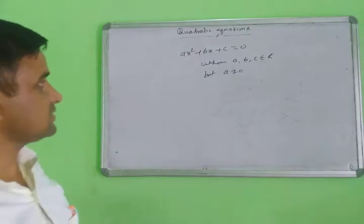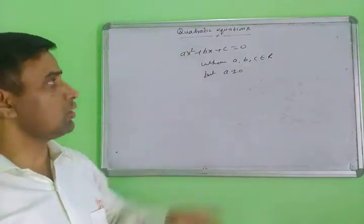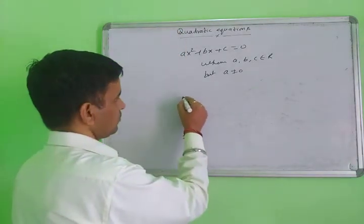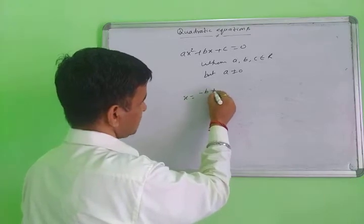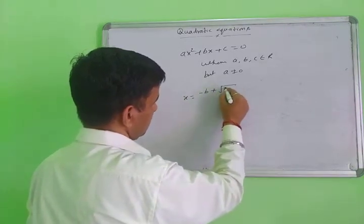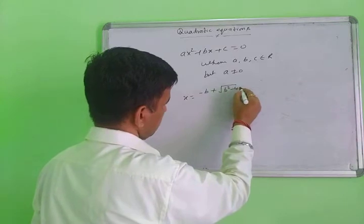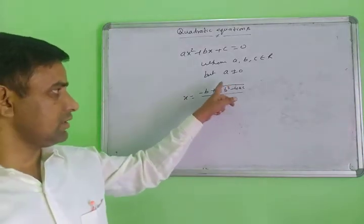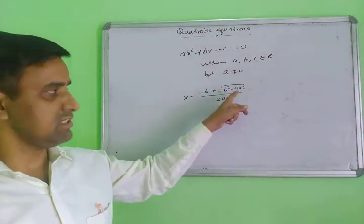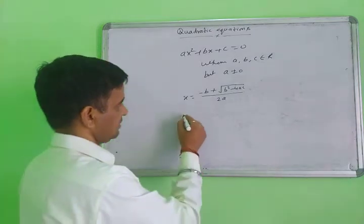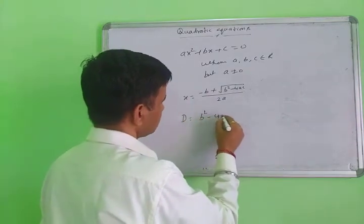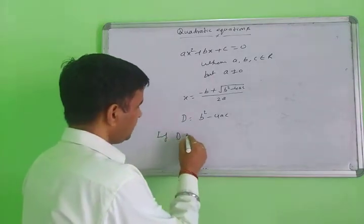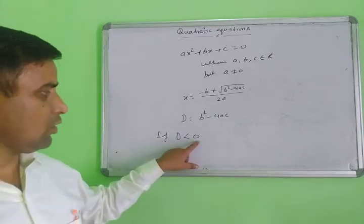Now, how to find the roots of this quadratic equation. The roots are given by the formula: x = (−b ± √(b² − 4ac)) / 2a. The quantity b² − 4ac is called the discriminant, denoted D. If D is less than zero — that is, a negative value — then the quadratic equation has imaginary roots.